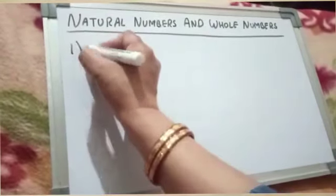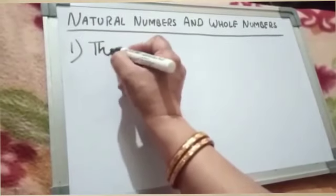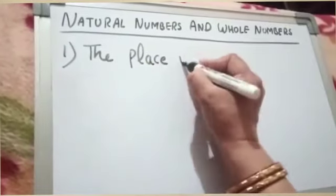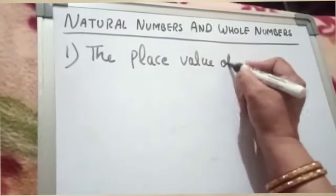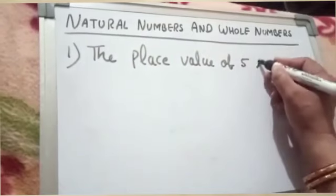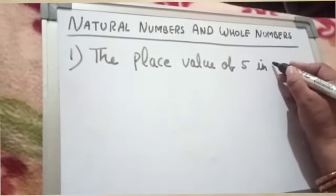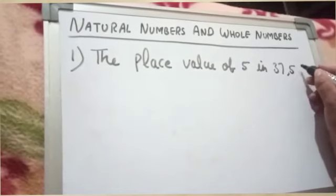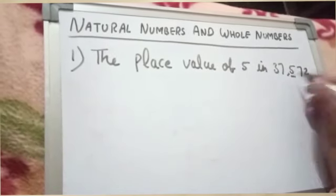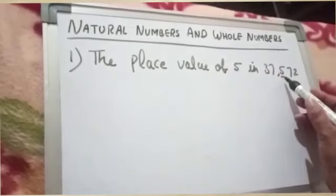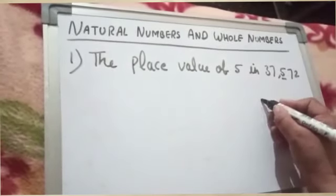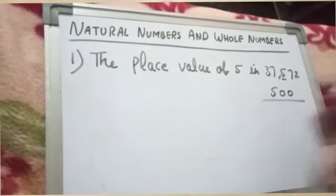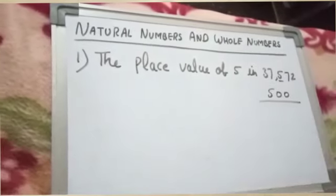Our first example is: what is the place value of 5 in 37,572? Because 5 lies at the 100th place, its place value is 500.